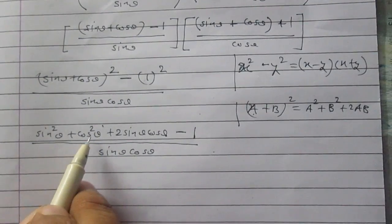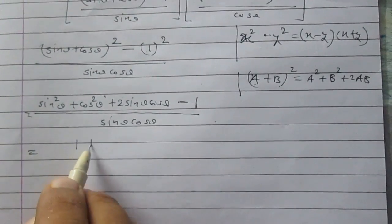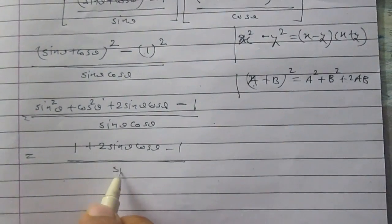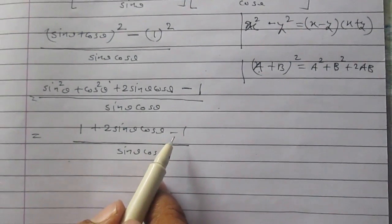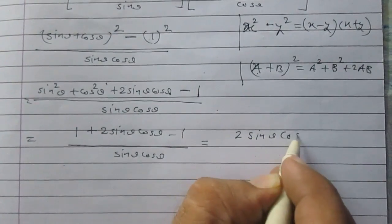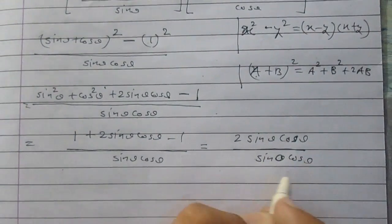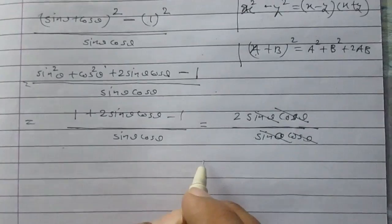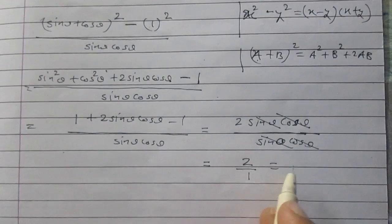We know that sin²θ + cos²θ = 1, so we can write the numerator as 1 + 2 sin θ cos θ - 1. The 1 and -1 cancel, leaving only 2 sin θ cos θ in the numerator. Dividing by the denominator sin θ cos θ, sin θ and cos θ cancel, giving 2/1, which equals 2. Hence LHS = RHS = 2.